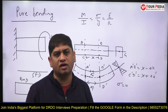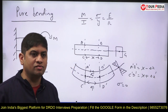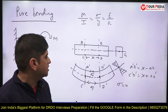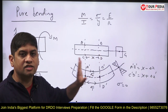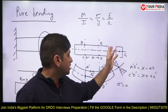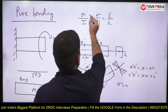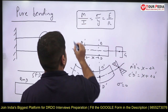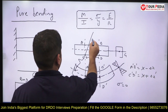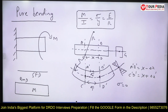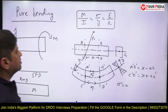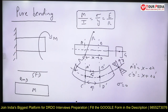As you move away from the neutral axis on either side, tensile and compressive bending stresses are induced. In the case of a straight beam subjected to bending, the centroidal axis and the neutral axis coincide. In the bending equation, R is the radius of curvature of the neutral axis, E is modulus of elasticity, σ is bending stress, y is the distance from the neutral axis to the fiber, M is the bending moment, and I is the moment of inertia.